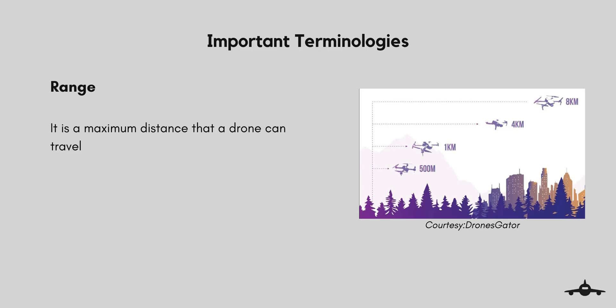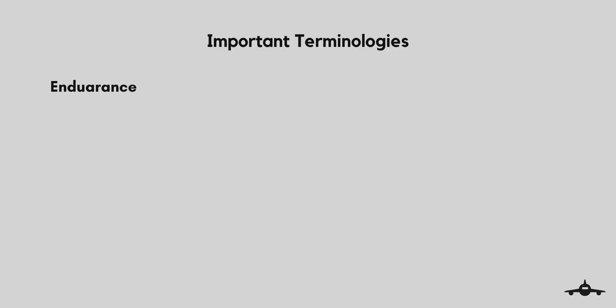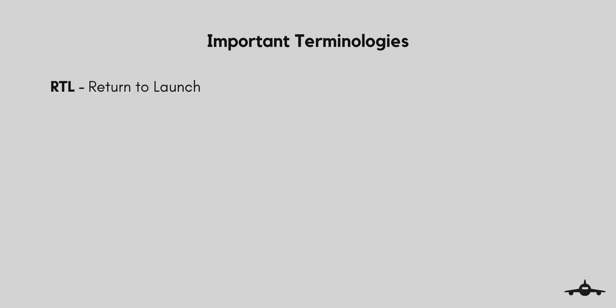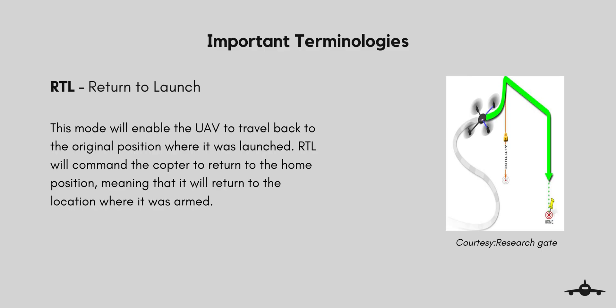Range refers to the maximum distance that a drone can travel; UAVs can be classified according to their range capabilities. Endurance for an unmanned aerial vehicle is described as the total time taken during flight — in simple terms, the maximum time a drone can sustain in the air. Endurance is also an important factor for UAVs.